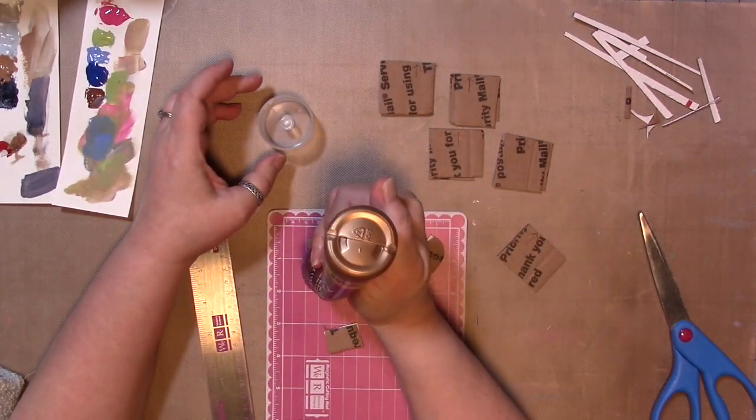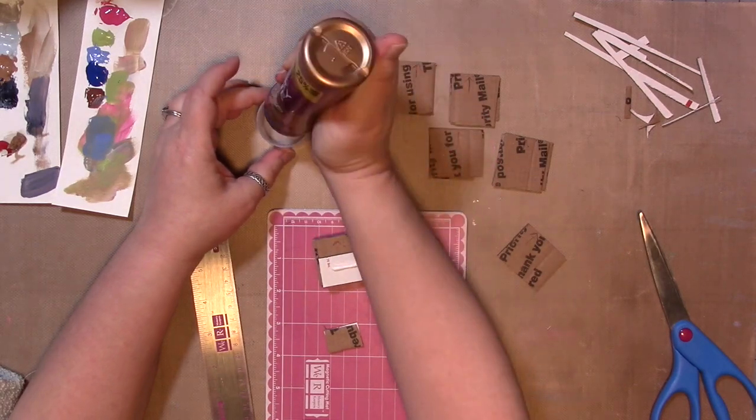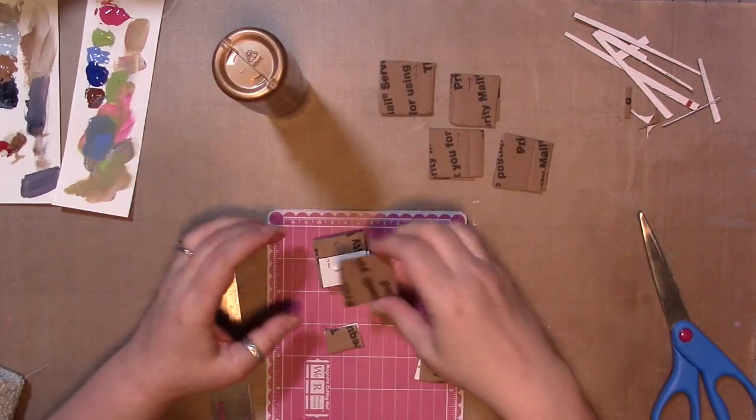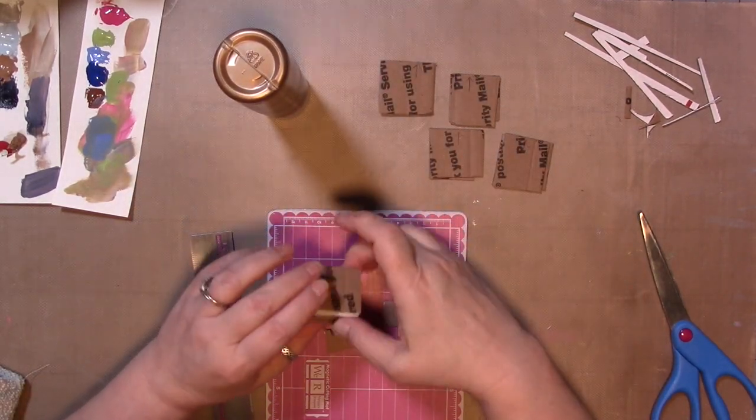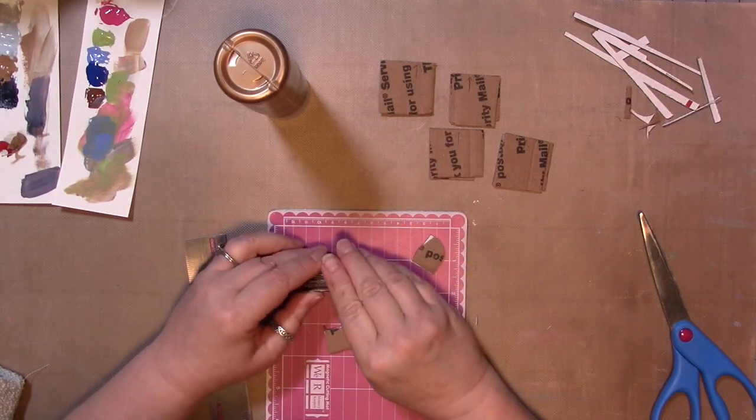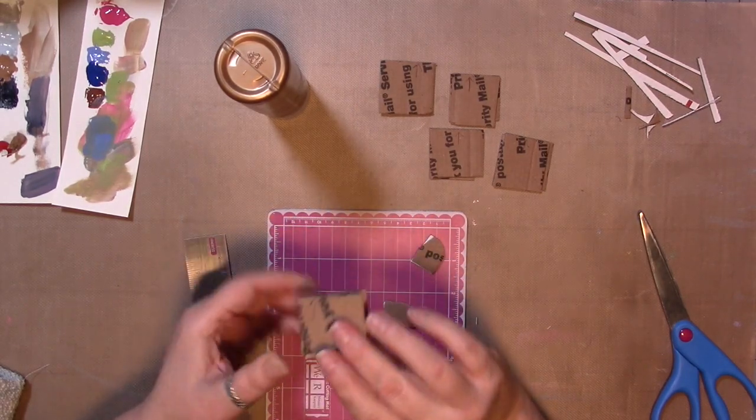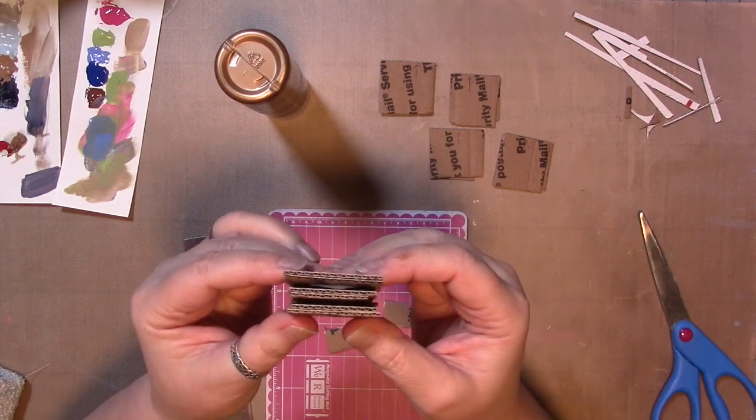And then another one, making a cardboard sandwich. More glue. I'm going to have to use a coupon soon to get some more tacky glue. So you want to keep doing that until you start to have something that looks like that.